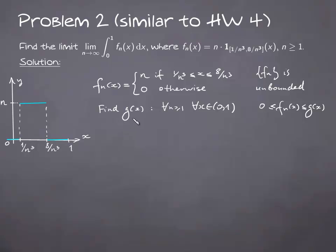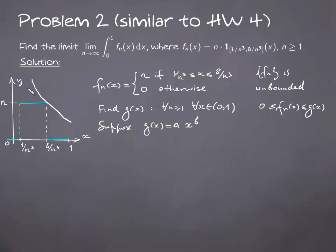If g(x) is an integrable function, then we can pass the limit under the integral sign. Let's suppose that g(x) is a power function and try to find coefficients a and b so that g(x) dominates all fn. Clearly g(x) has to be a decreasing function, so this plot goes something like that. If we dominate fn at the point 8 over n cubed, then g will dominate fn at every point from 0 to 1.